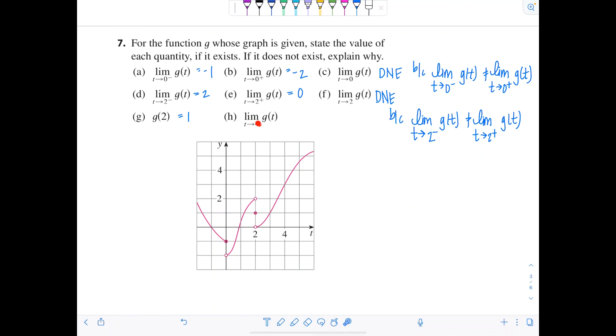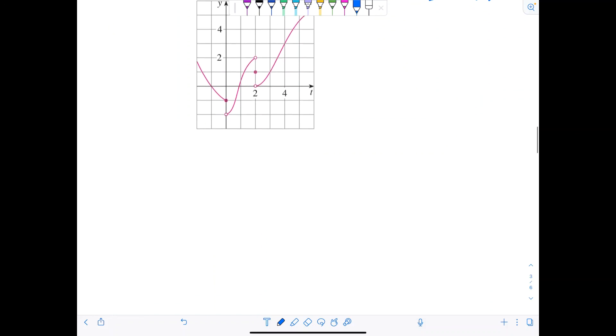What is the limit as t approaches 4 for g of t? So notice here they didn't tell me which side. So you have to check both before you can answer this question. So here's 4. If we approach from the left of 4, the function is approaching 3. If we approach from the right of 4, same thing. So we're good to go. The limit as t approaches 4 of g of t equals 3. Okay. Nice. Beautiful. One more.